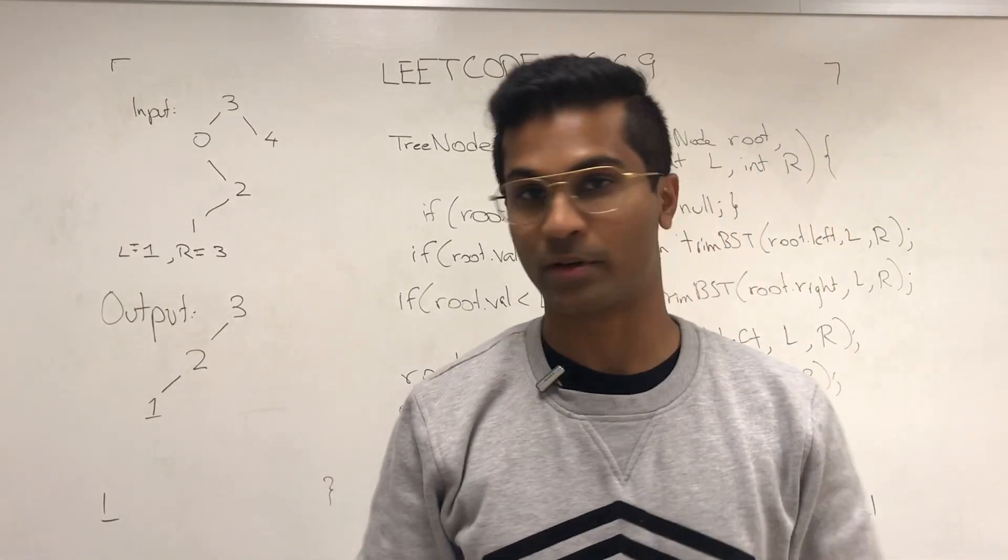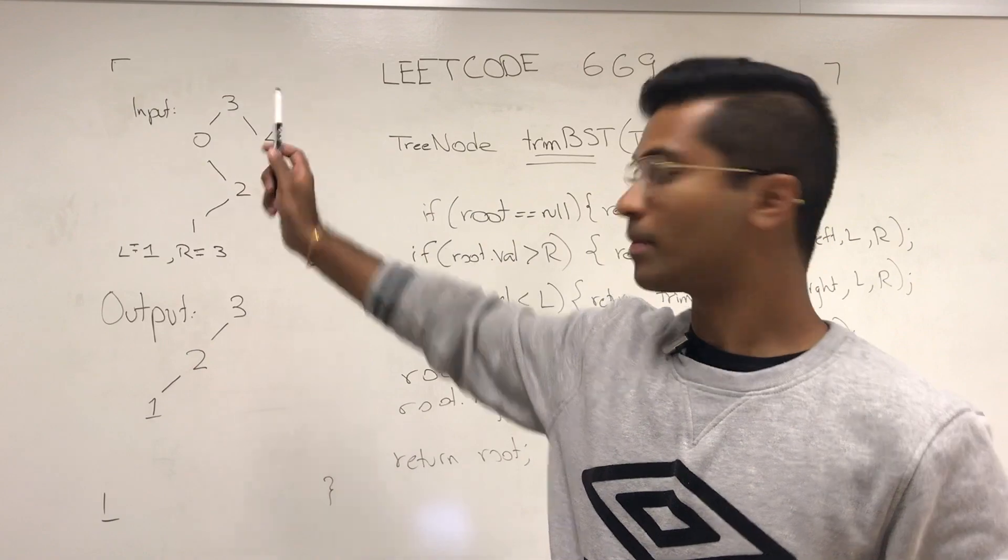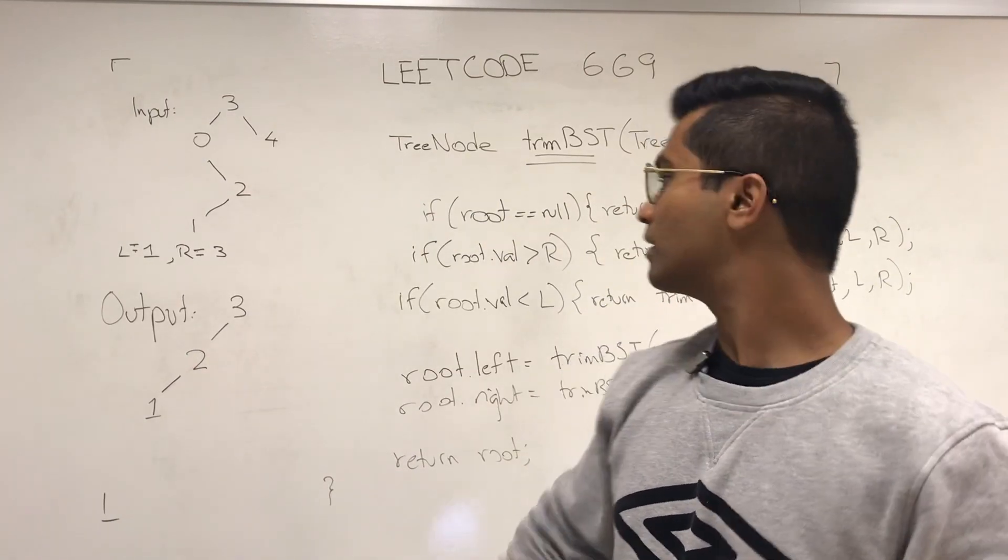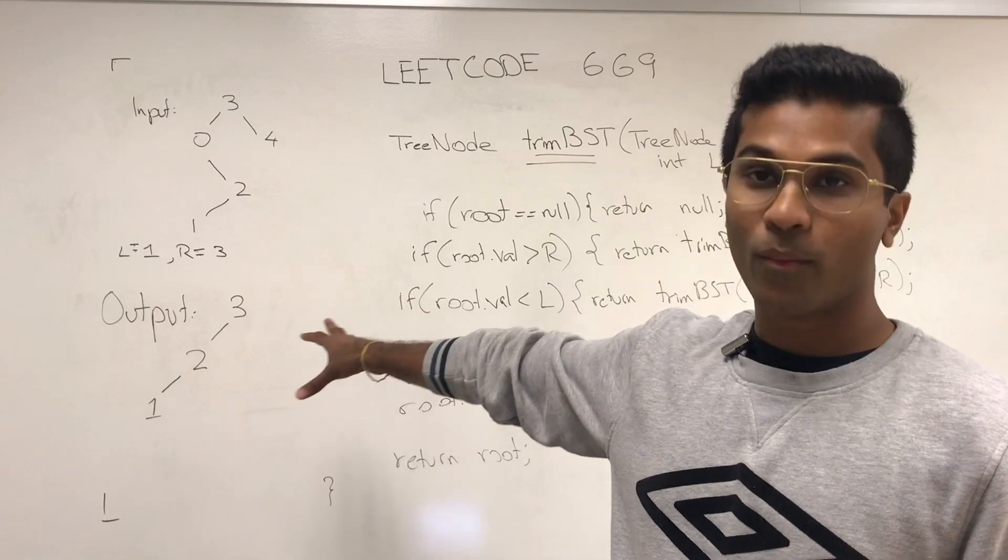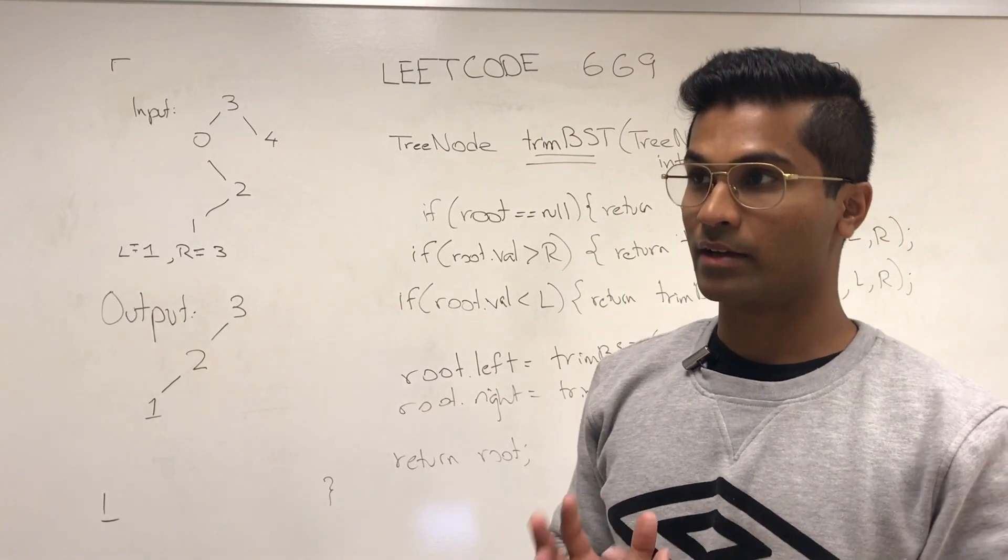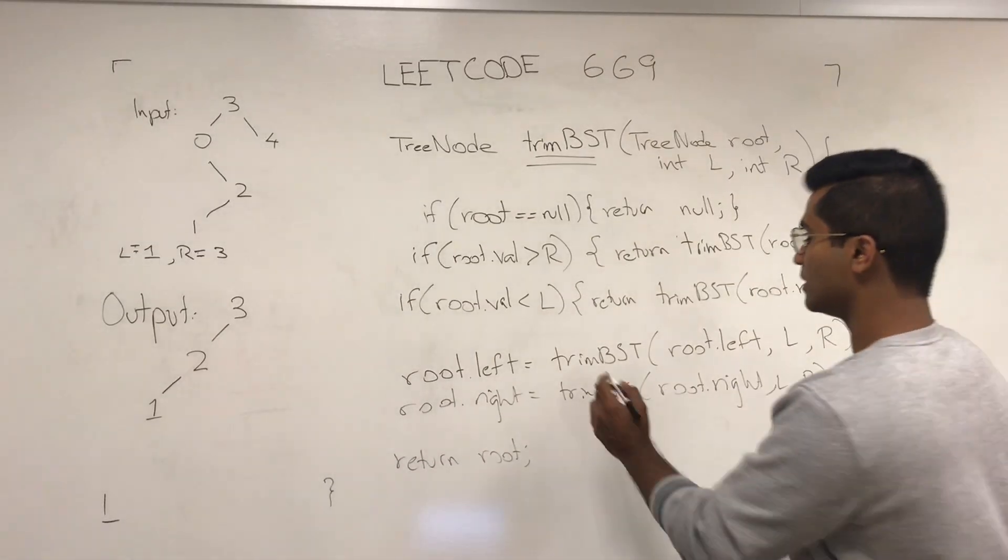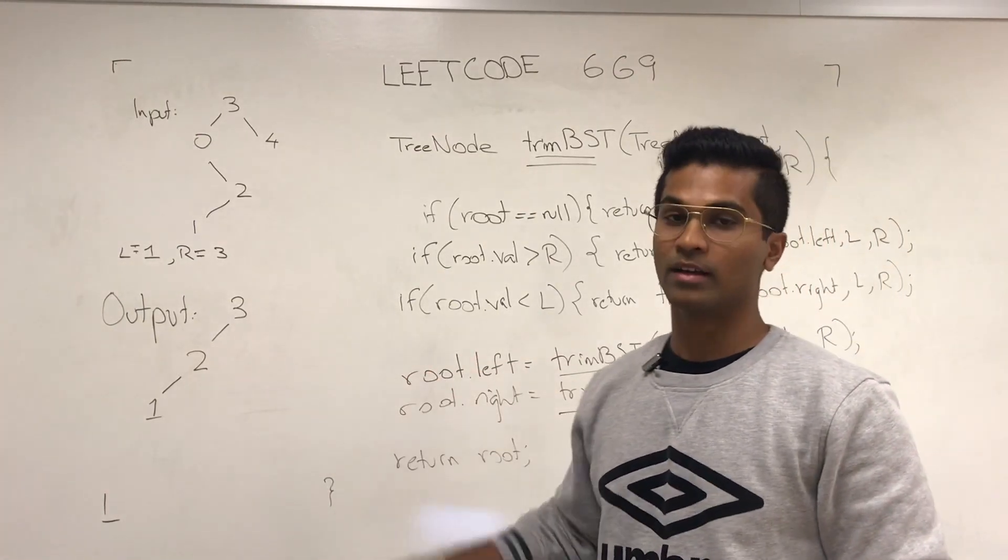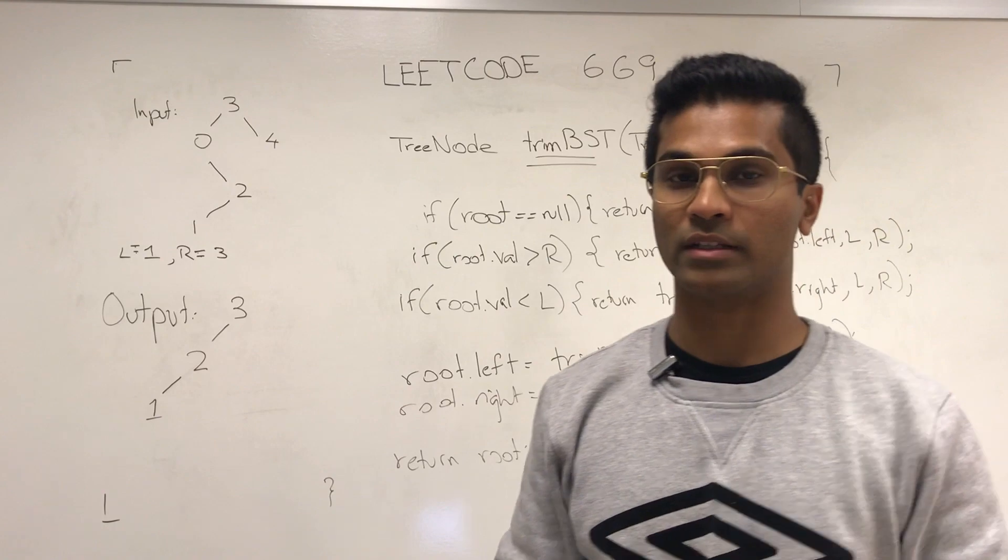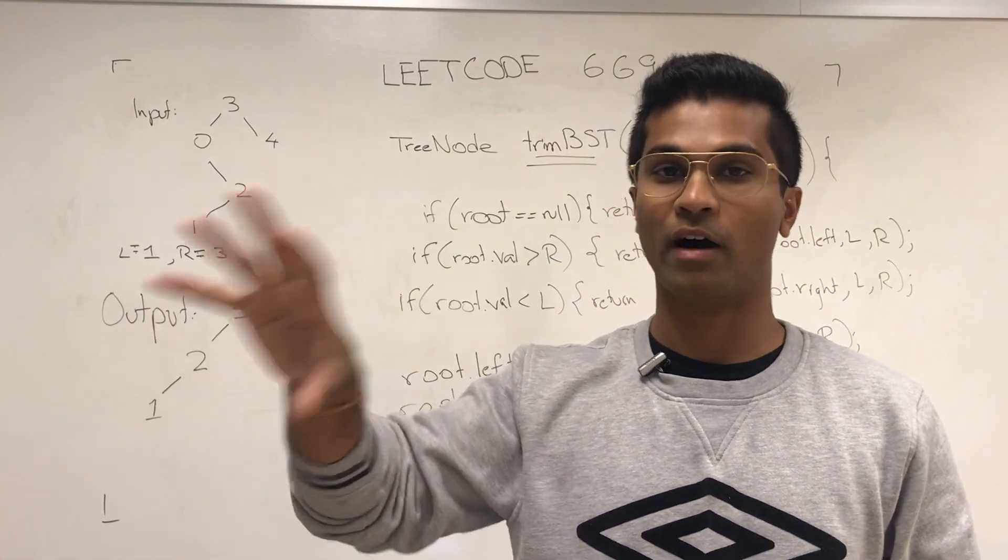So, let's go over what happened. When we first ask three, it's going to say, hold on, let me ask my left and right, and whatever the left and right give as the answer in trim BST, it's going to put on its left and right. Now, let me draw the stack recursion of how things go.